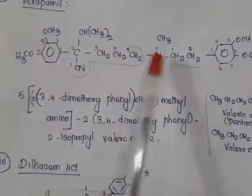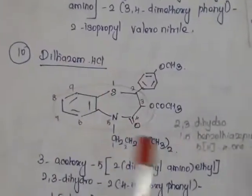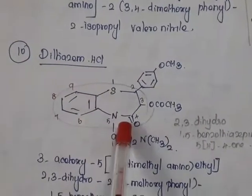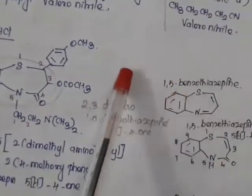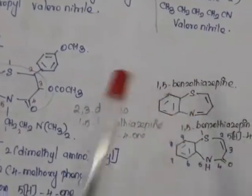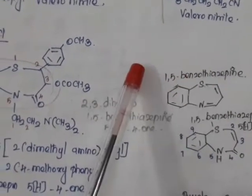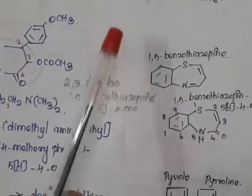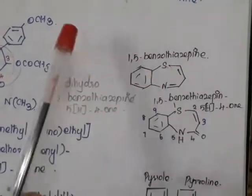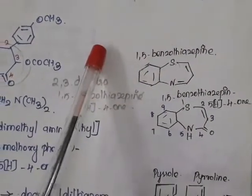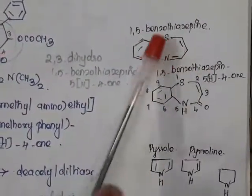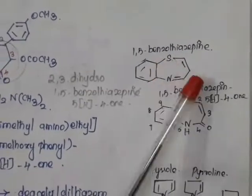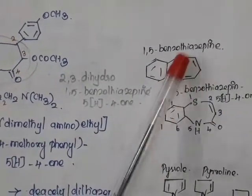Verapamil is a phenylalkylamine type calcium channel blocker. The next one is diltiazem, which comes under the benzothiazepine class of calcium channel blocker. What is azepine? A 5-membered heterocyclic ring having only one nitrogen is called pyrrole; if 6-membered it is pyridine; and if 7-membered it is called azepine.